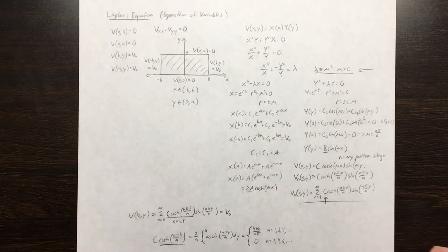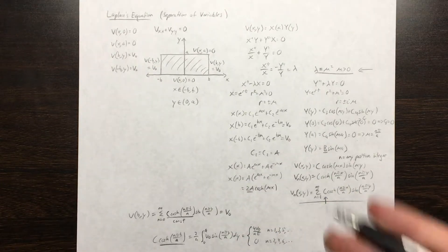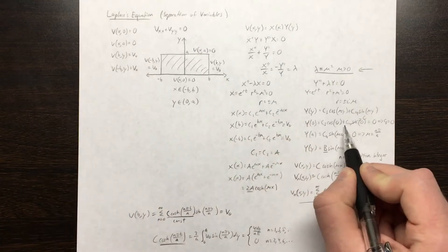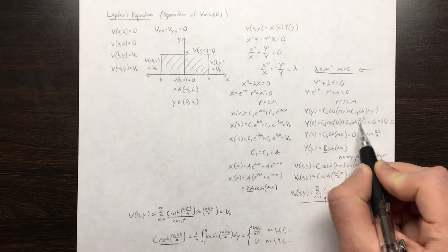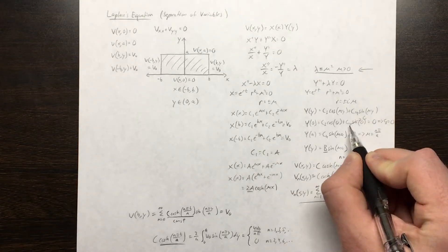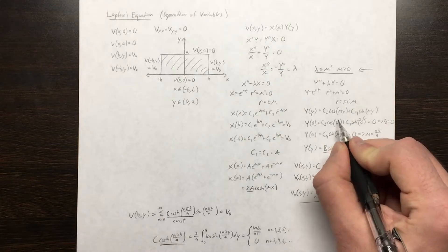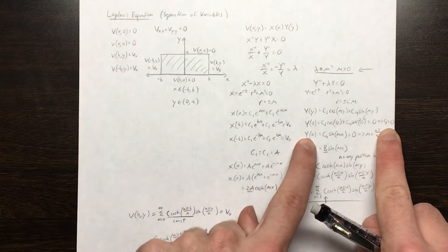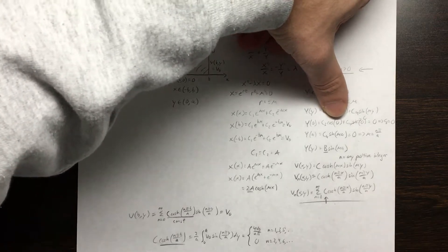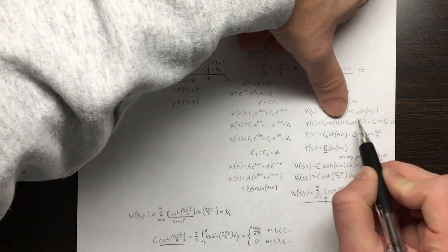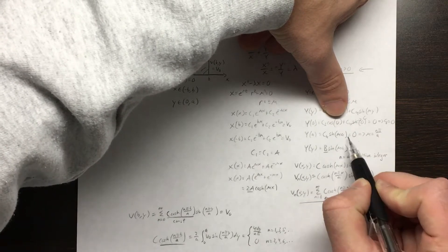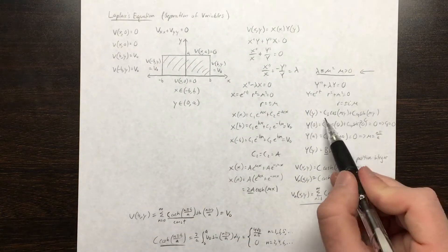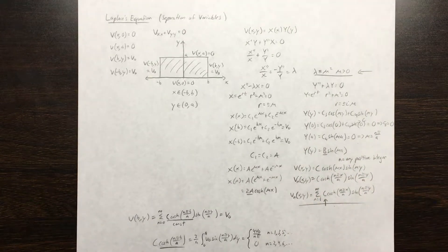Now we apply the boundary conditions to the y solution, where y(0) = 0 and y(a) = 0. Substituting y = 0: c3·cos(0) + c4·sin(0) = 0. Since sin(0) = 0 and cos(0) = 1, we get c3 = 0. For the second boundary condition y(a), we discard the cosine term since c3 = 0, leaving c4·sin(mu·a) = 0. Now c4 cannot be zero, because then both c3 and c4 are zero, giving only the trivial solution.